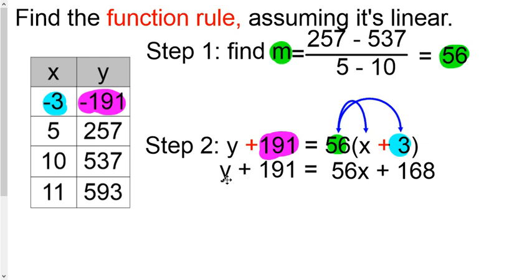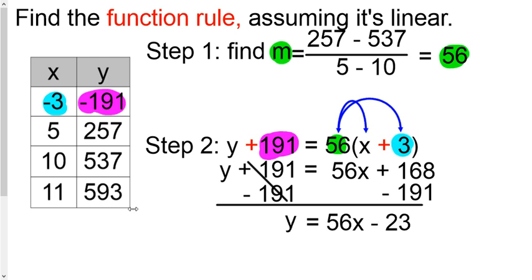And now just get the 191 away from the y. So look in front. Since it's adding, you can say minus 191 on both sides. The y drops. 56x drops. And then 168 minus 191 is negative 23. So we just slide that right up. And that is your function rule. That is the equation.